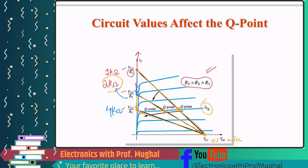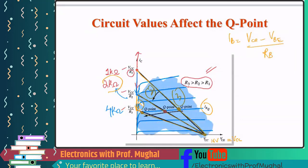IB remains constant, coming from IB equals VCC minus VBE over RB. Which Q point is better? Position two is better — it's somewhere in the middle of the active region. It's important to understand how changing VCC, RC, and RB values shifts the Q point.